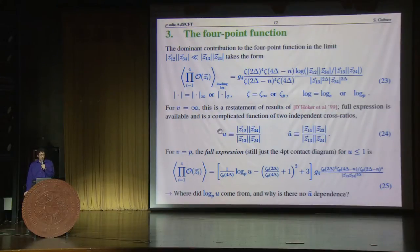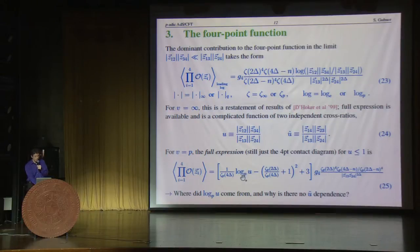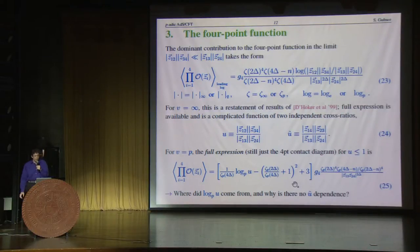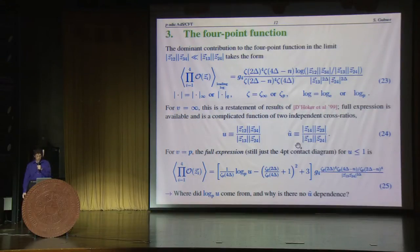What's perhaps more remarkable than that continuation from the reals to the p-adics is that the full expression for the p-adics — the full four-point function, at least the full four-point function that comes from a contact diagram — is very simple. This logarithmic behavior is here and it's corrupted only by a couple of small finite terms inside square brackets. I'd like to ask where this logarithmic behavior came from in the sense of p-adic numbers and the tree, and why there is no dependence on the other cross-ratio — more often called V, but I was using V for something else.